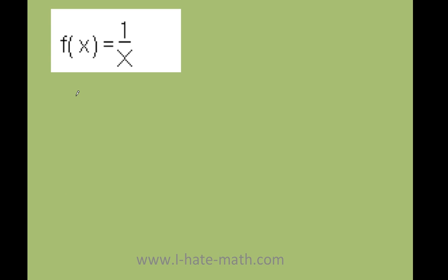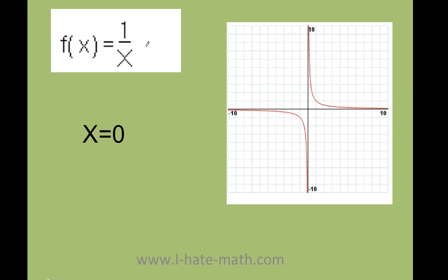Anytime you have a function where you have the variable in the denominator, you will have what we call a vertical asymptote. When I want to find the vertical asymptote, I just grab whatever I have in the denominator and make it equal to zero. Here, when I do x equals zero, this is what we call a vertical asymptote because the function is going to get really, really close to it, but it will never touch it.